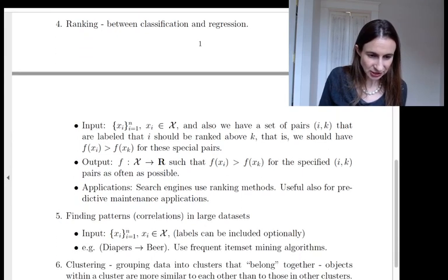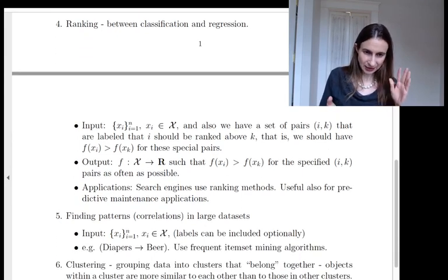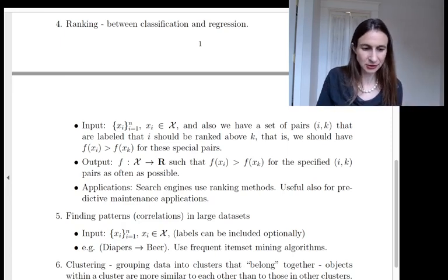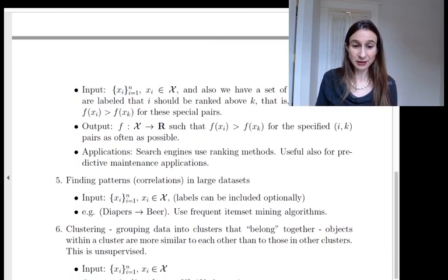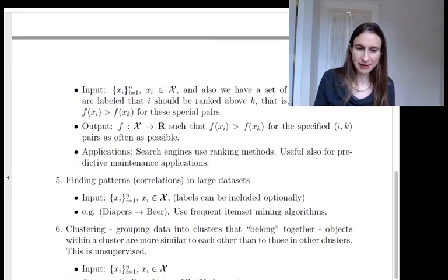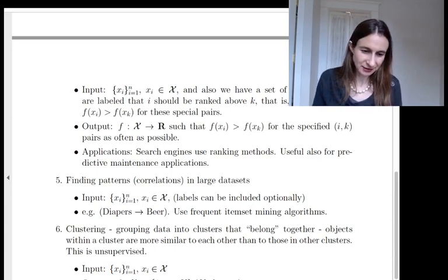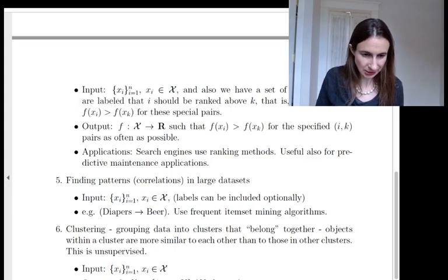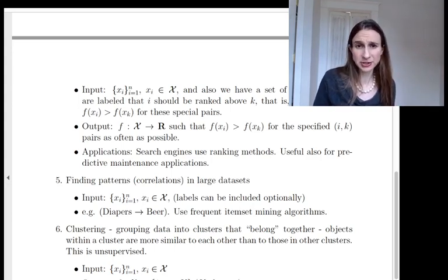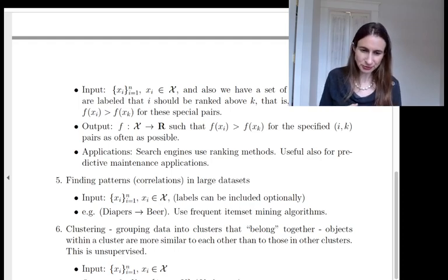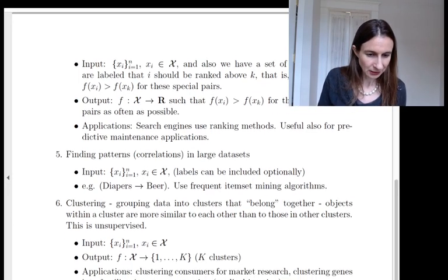Okay, so the output is this function that should try to rank i above k as much as possible for all of the i-k pairs that you get in your data set. Good applications for ranking are search engines. There was a lot of activity in learning to rank a while back where people were trying to use learning to rank methods to figure out which web pages to rank above which other ones. And I think Bing still uses learning to rank methods. It's quite useful for learning to rank on web pages that are brand new or that are unusual somehow. It's also useful for predictive maintenance applications. Like if you just want to know which airplanes you should rank above which other ones for service, then you can use learning to rank method.